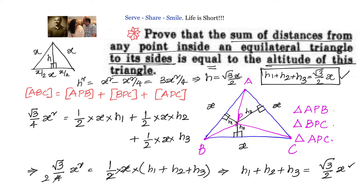The altitude of an equilateral triangle is root 3x by 2. And we have proven that the sum of distances from P to AB, BC, and AC equals root 3x by 2. That is how we have proven that the sum of distances from any point inside an equilateral triangle to its sides equals the altitude of the triangle.